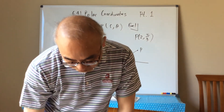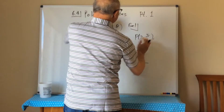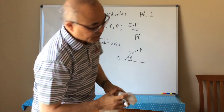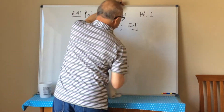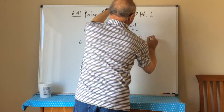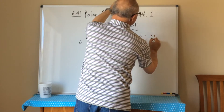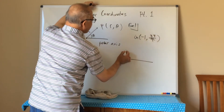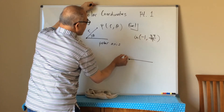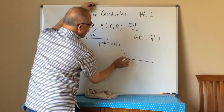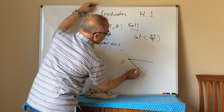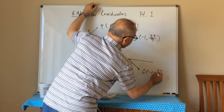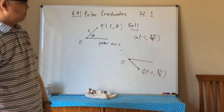Part b is (-1, 3pi/4). We call this point q. From the origin, I go 3pi/4, which is 135 degrees, but I'm going negative 1. So from here I go negative 1 in that direction. This point q is (-1, 3pi/4).